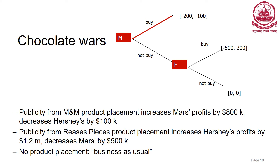The game is analyzed by backward induction — start with the sub-tree at Hershey's decision node. Hershey chooses between 0 or 200, so Hershey will choose to buy and earn a profit of 200. Mars should anticipate that if it does not buy, Hershey will buy, giving Mars a loss of minus 500. If Mars does buy, the loss is minus 200. Either way a loss is inevitable, so Mars should minimize its loss by buying and not giving that chance to Hershey.